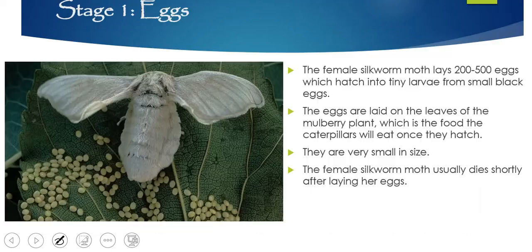The life cycle of a silkworm moth. Stage one: the female silkworm lays about 200 to 500 eggs, and they hatch into larvae from small black eggs. You can see there's the mum, and you can see just how small they are and how many there are. The eggs are laid on the leaves of the mulberry plant, which is the food that the caterpillars will eat once they hatch — they love to eat mulberry plant leaves. The female silkworm moth actually usually dies shortly after laying her eggs.